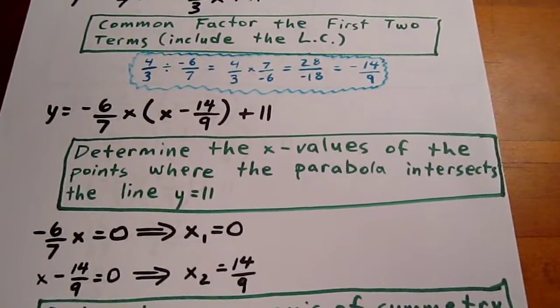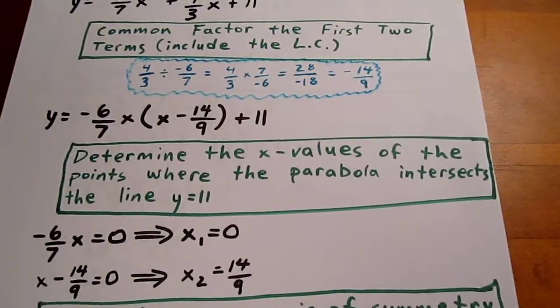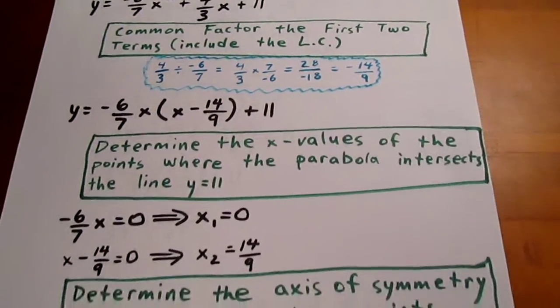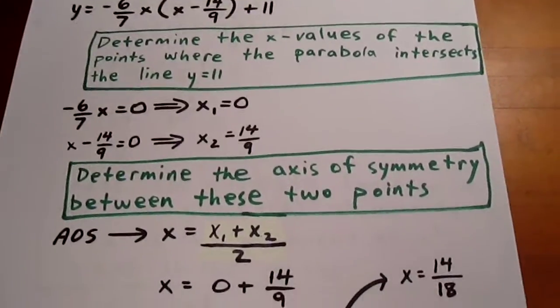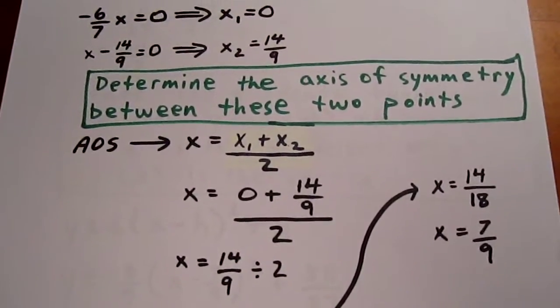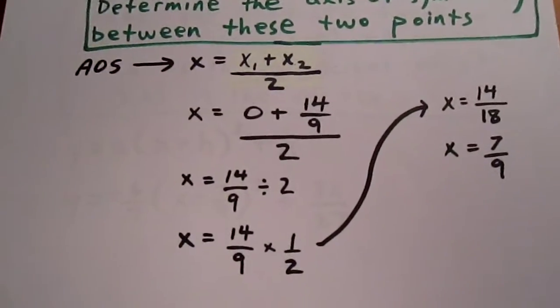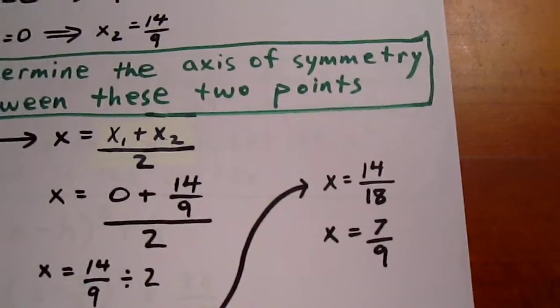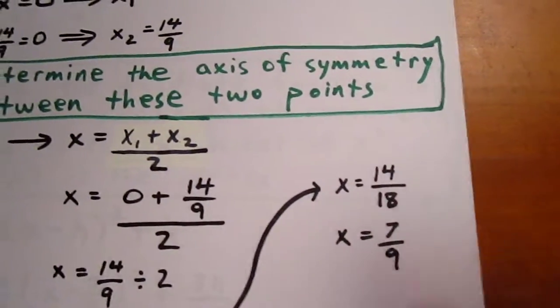We can determine the x value of our axis of symmetry by adding those two values and dividing by 2. And so what we get is 0 plus 14 over 9 over 2, which is 14 over 9 divided by 2, which is the same as 14 over 9 times a half, which ultimately reduces to 7 over 9. There's the x value of my vertex.